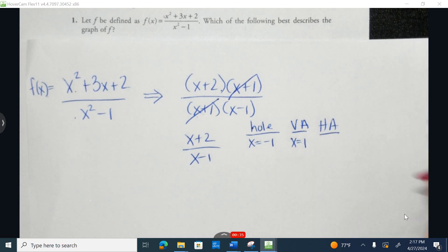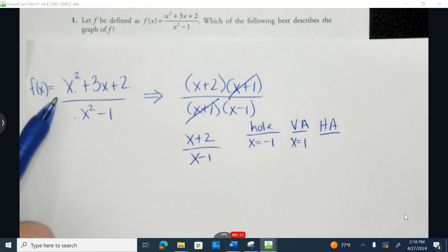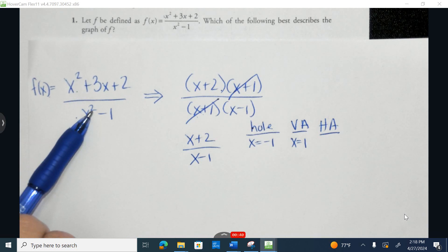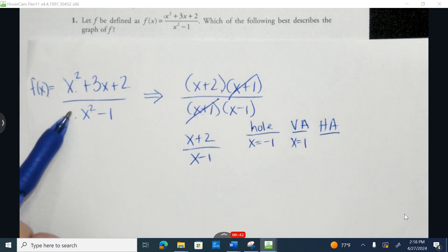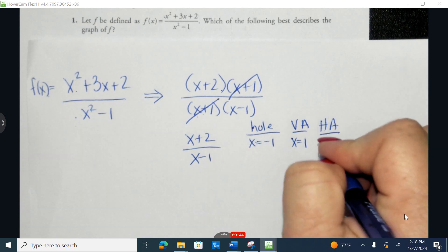A horizontal asymptote will occur - let's go back to the original function when the degree in the numerator is equivalent to the degree in the denominator. I'm going to divide the leading coefficients. 1 divided by 1 is 1.